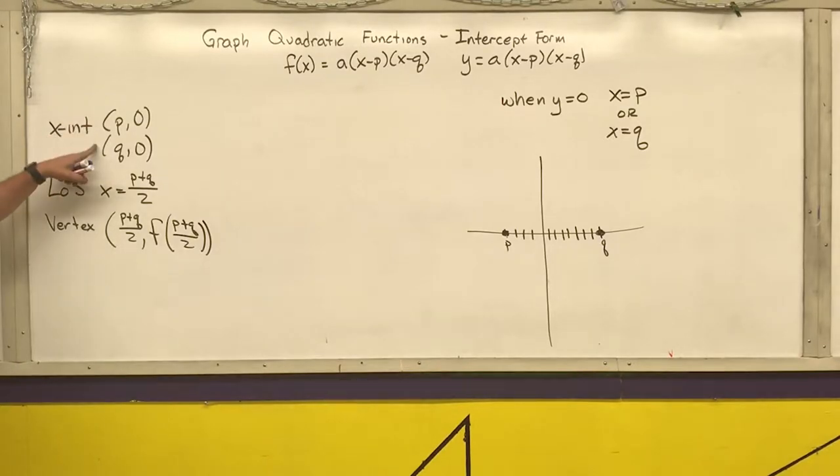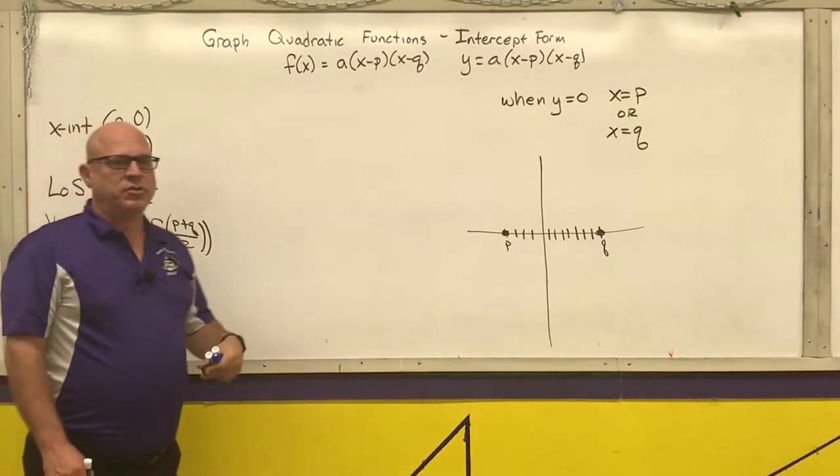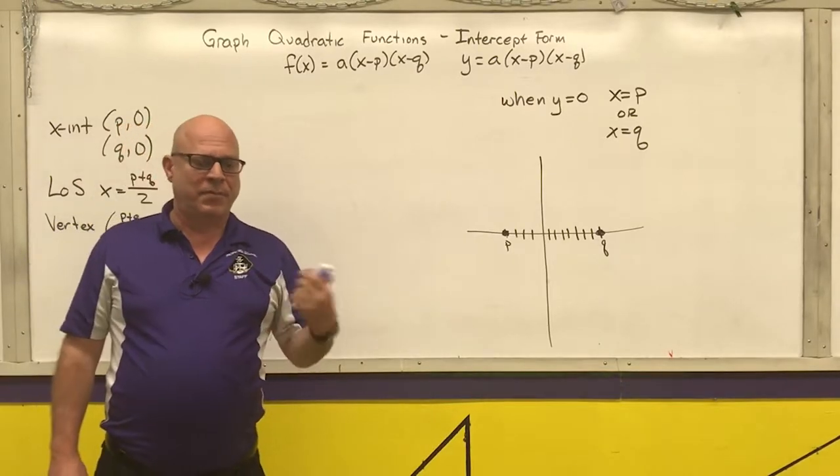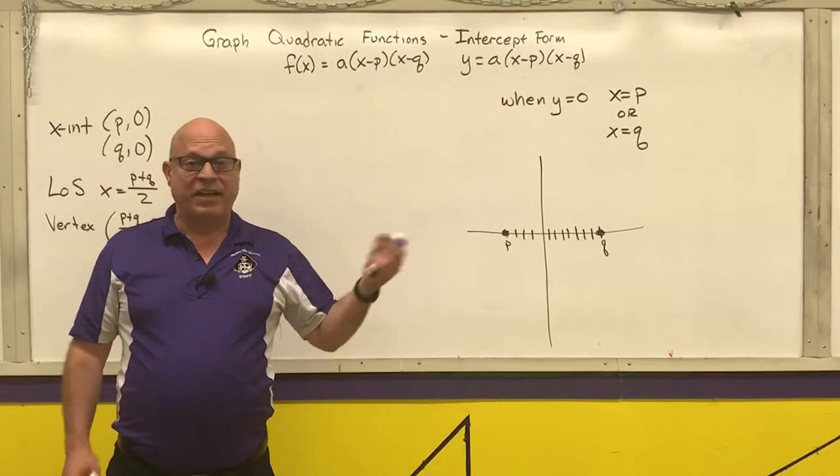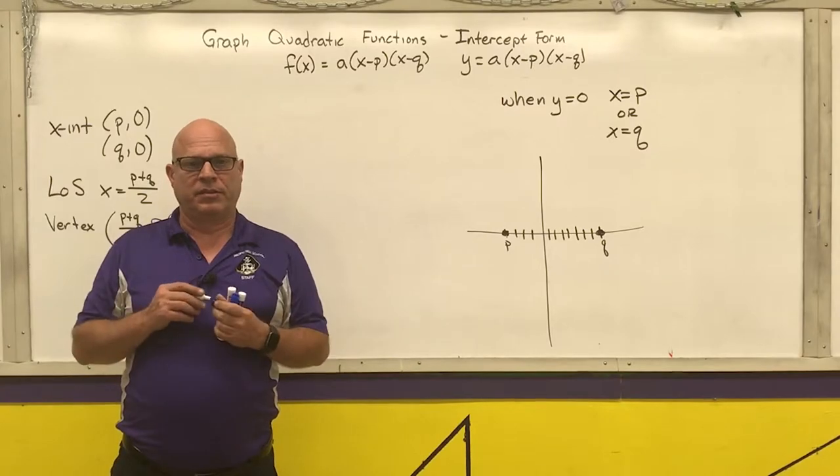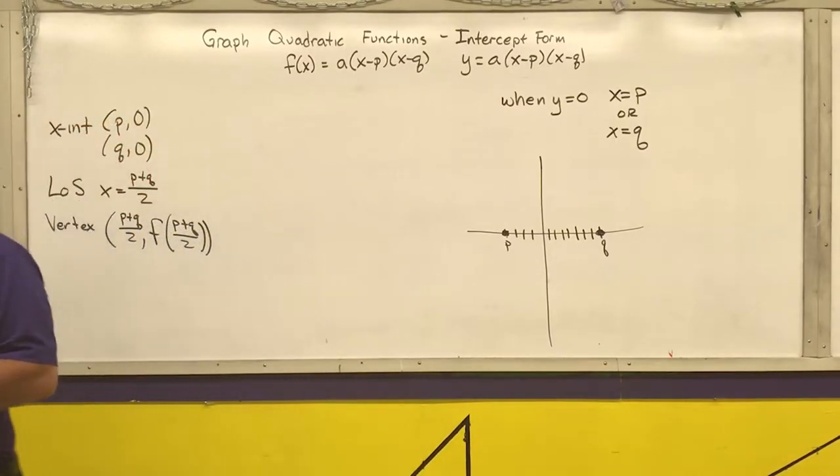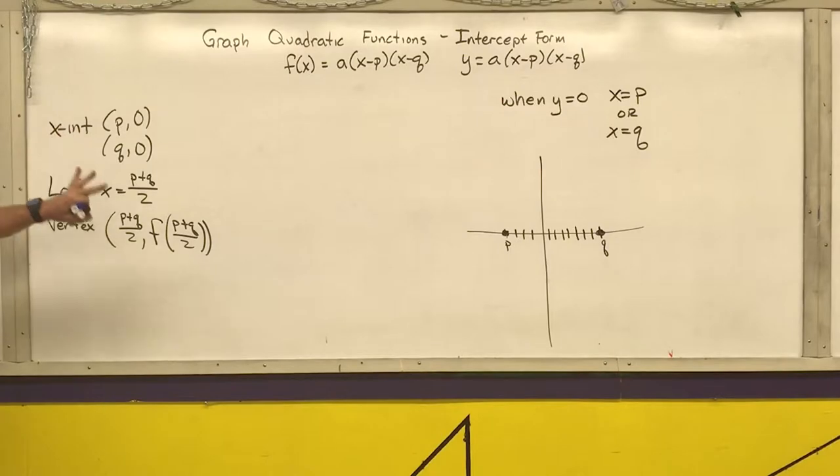So you now have two x-intercepts. You've got a vertex. And then we can use the same rules. Over 1, up a, up or down a, and that will get you your other points using symmetry. So those are the generic ideas that are behind this. And now what I'm going to do is I'm just going to do some example problems that are already in intercept form.